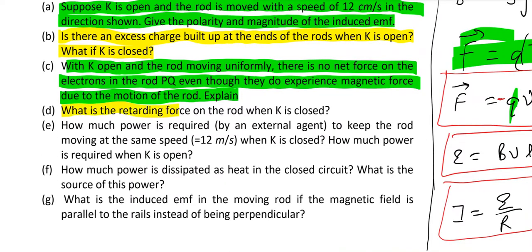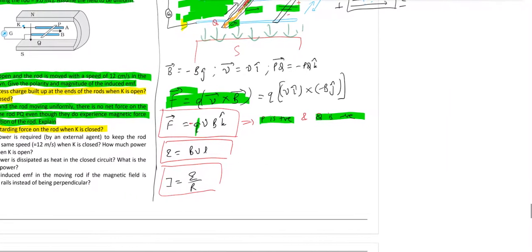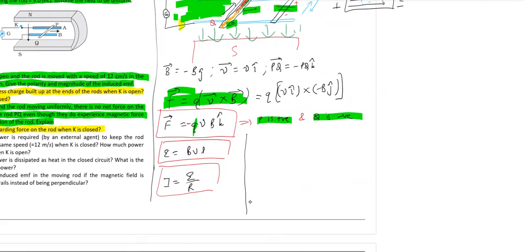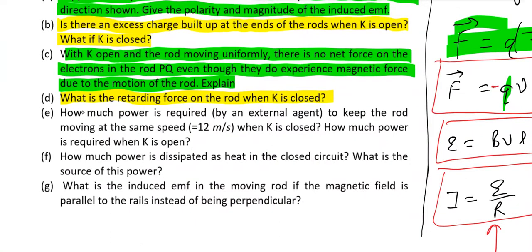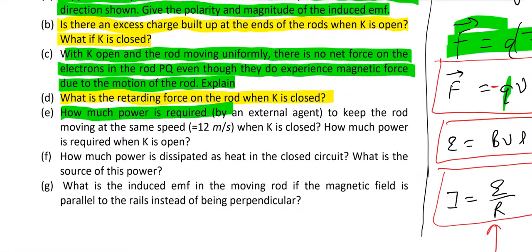What is the retarding force on the rod when K is closed? So we have one more force in the picture. That force can be given by force on the rod: ILB. We have current. We can calculate current if we don't have it, using this formula. And then you can find out force on the rod with this formula ILB.